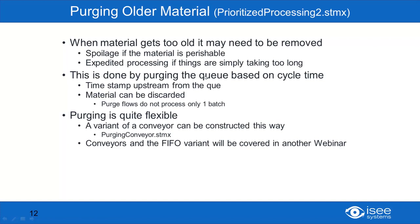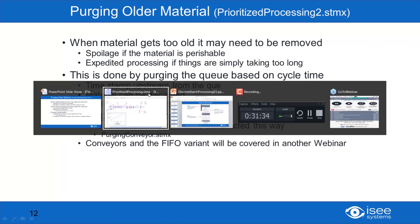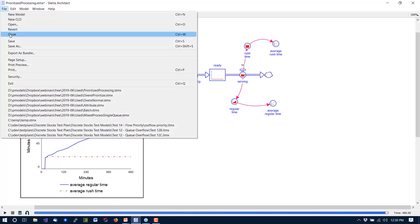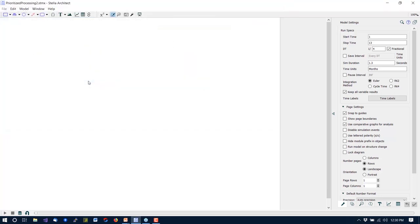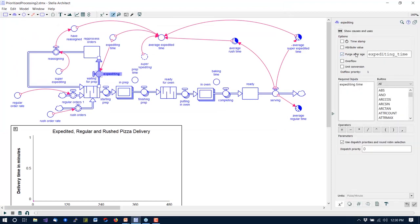Spoilage if it's a perishable, but in the case we're going to work here, expedited processing if things are simply taking too long. This is done by purging the queue based on cycle time — the timestamp upstream from the queue is used to figure out how long something has been in the queue. The material can be discarded, or in this case we're actually going to take the material and put it into another processing chain. Purge flows do not process. Purging is pretty flexible — I'm going to show you an example in a moment. Let's go through the purging version of the pizza store — that is purging_processing_2.